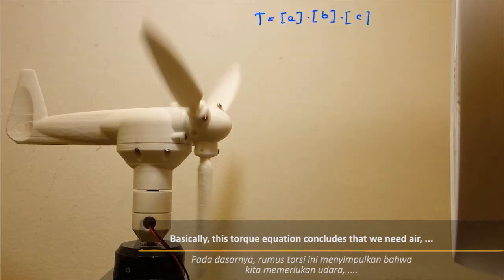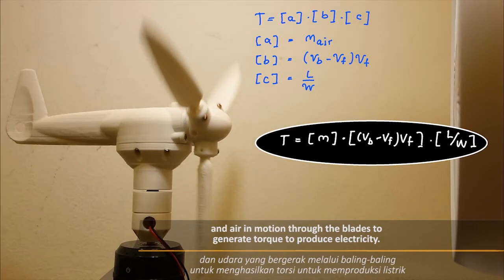Basically, this torque equation concludes that we need air and air in motion through the blades to generate torque to produce electricity.